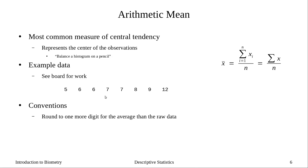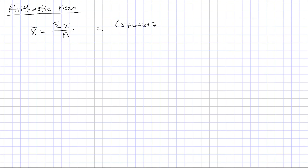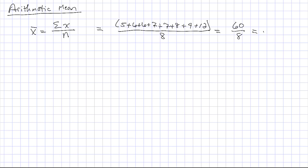For example, here are the numbers 5, 6, 6, 7, 7, 8, 9, and 12. The arithmetic mean is calculated as x-bar equals the sum of our x's divided by the sample size. So we add up all our data: 5 + 6 + 6 + 7 + 7 + 8 + 9 + 12, and divide by the sample size of 8. Running this through the calculator, I get 60 divided by 8, which equals 7.5. That is the average of our vector.